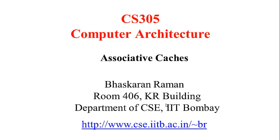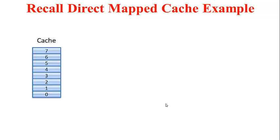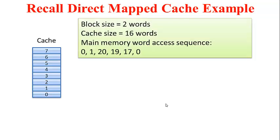This video introduces the idea of associativity in caches. To motivate this idea, let us recall the example we had seen with the direct-map cache. We had a cache of 8 blocks, each block being 2 words, and a particular memory access sequence given by a sequence of memory word addresses.